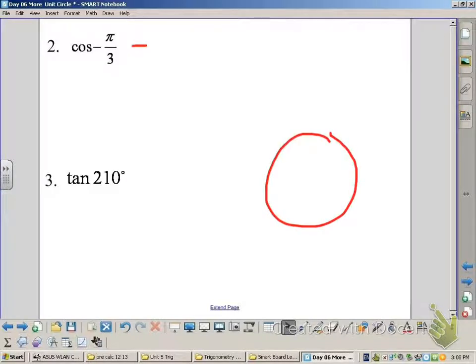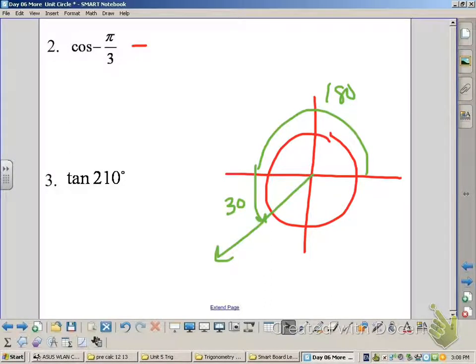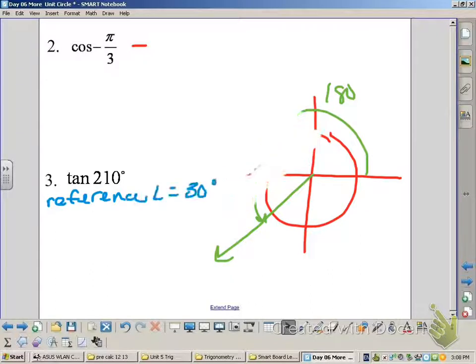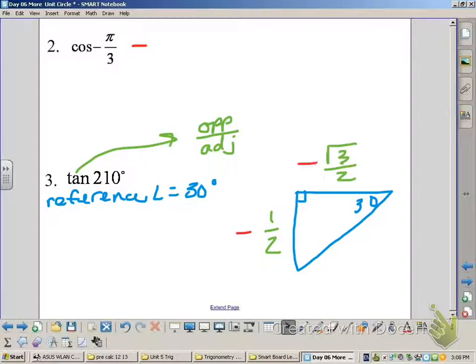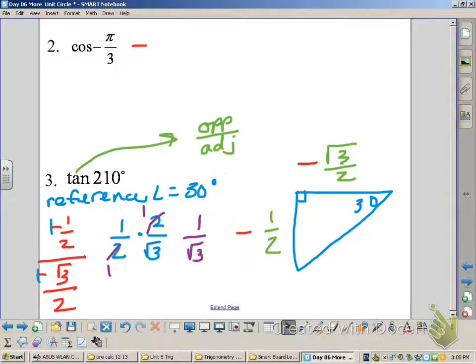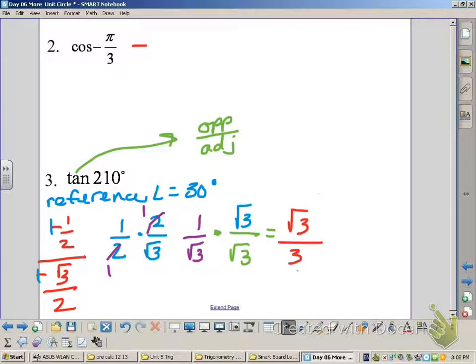Let's take a look at the tangent of 210. For 210, we go around past 180, another 30 degrees. So our reference angle is 30 degrees. As we take a look at that triangle, remember about tangent is opposite over adjacent. Our opposite side is 1 half. Our adjacent side is root 3 over 2. Since we're in the third quadrant, we know our y values are negative, and so are our x values. So when we write our ratio of opposite over adjacent, our negatives divide out, and we have to divide by a fraction. Then we have to rationalize our denominator, which gives us square root of 3 over 3 for our answer.